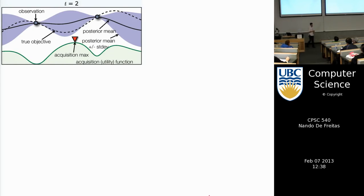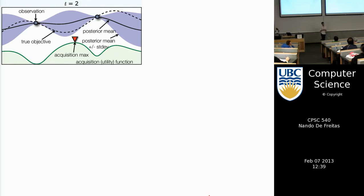This is how we're going to solve it in this class: by using the tools of Gaussian processes throughout, to deal with the problem of trading exploration and exploitation. It's also possible to use other statistical models, but for now we'll assume we have Gaussian processes at our disposal, since that's the technique we've learned so far.